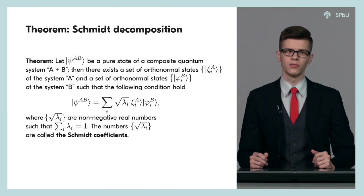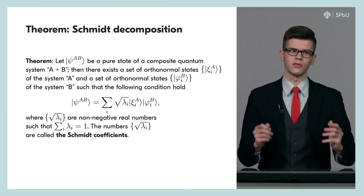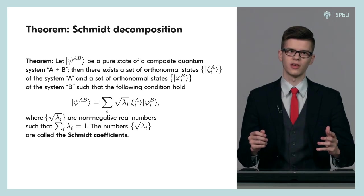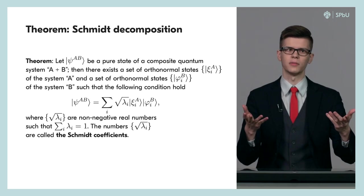Let us formulate the following theorem, which is also known as the Schmidt theorem. Suppose a state vector Psi sub AB describes a pure state of a composed physical system that consists of A and B subsystems.